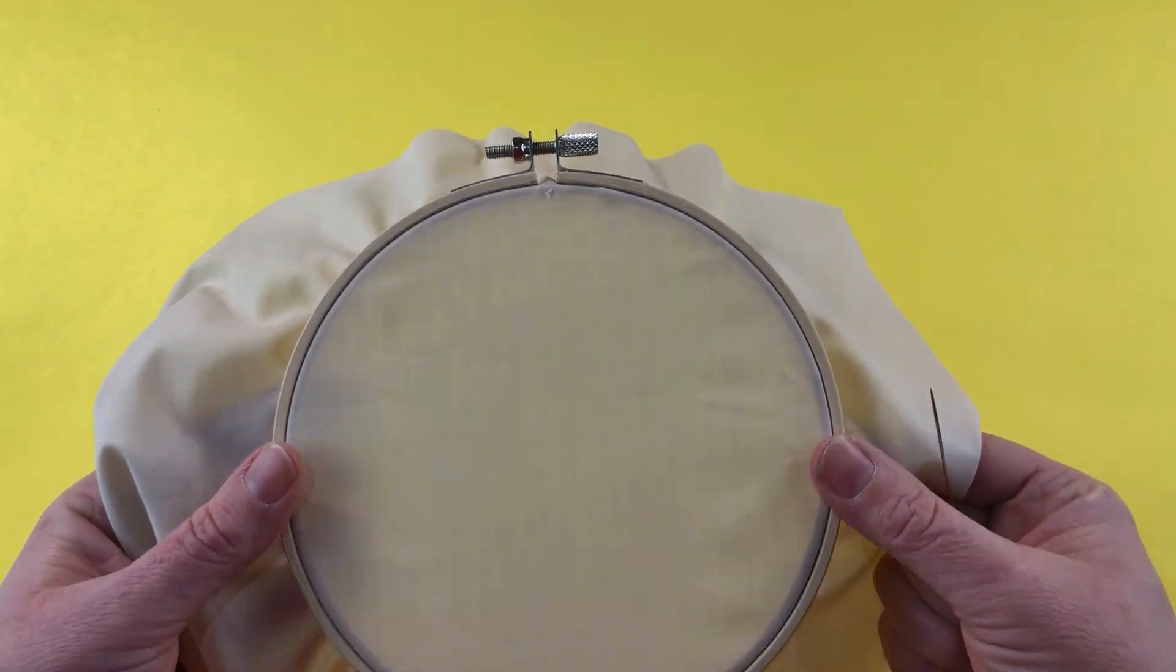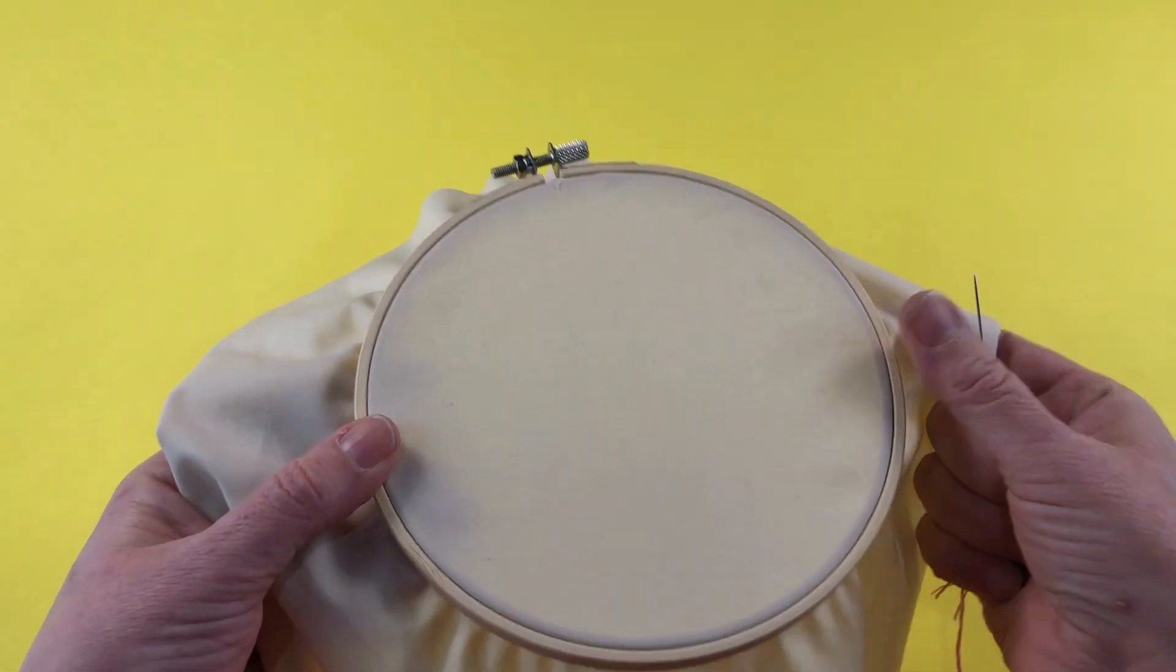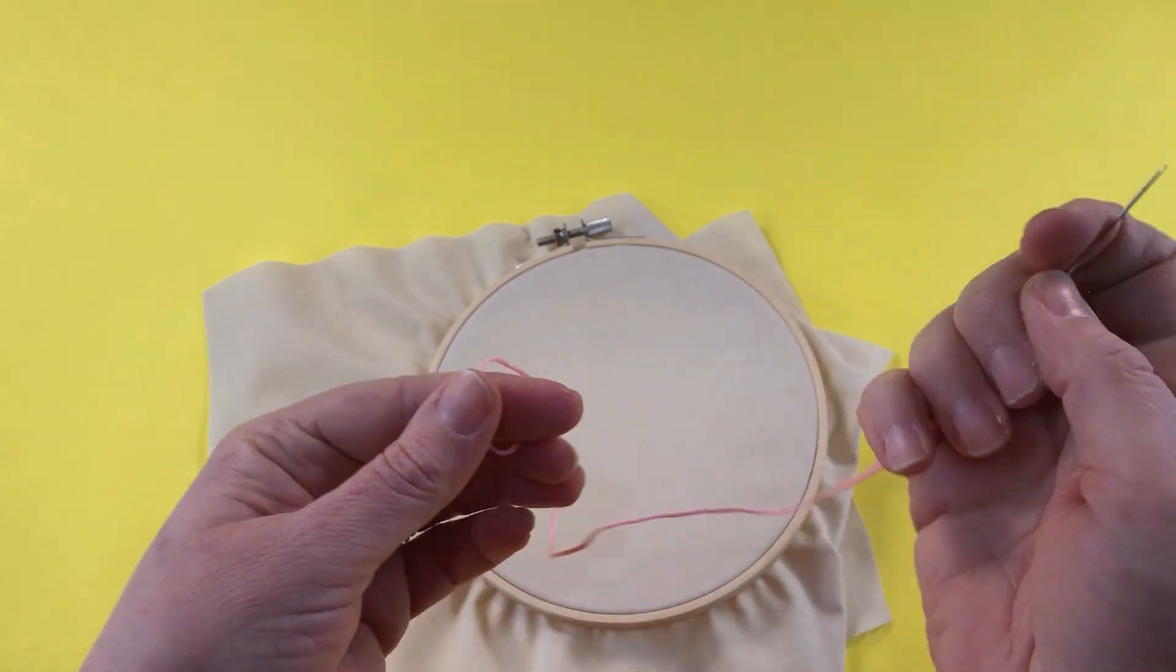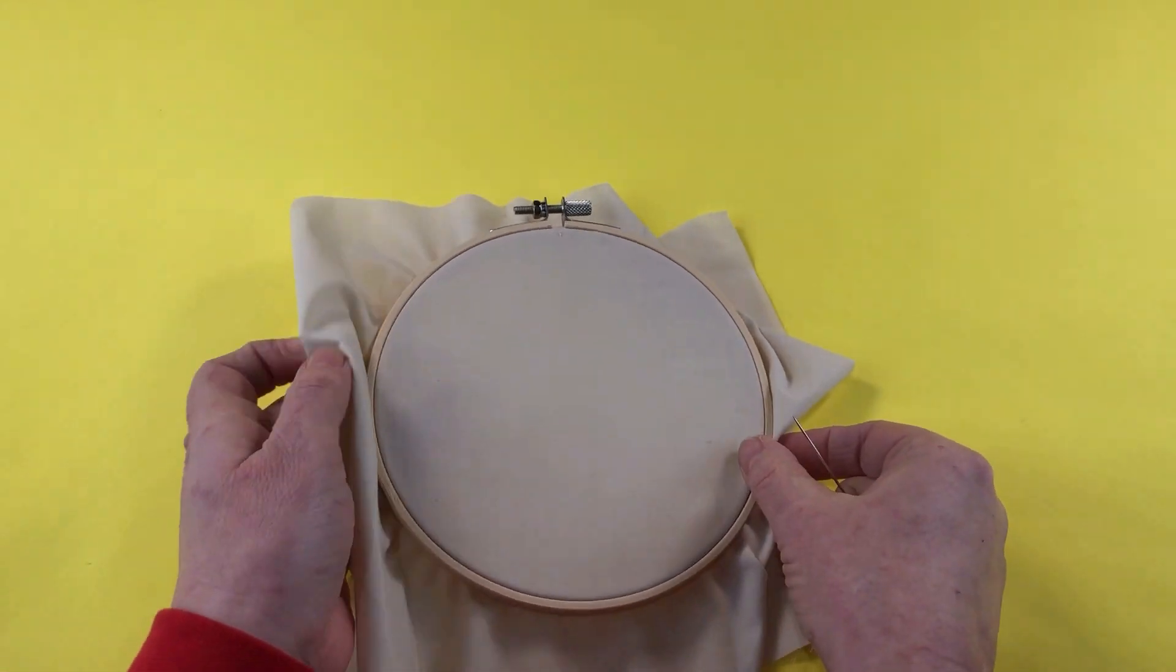In today's tutorial we're going to be looking at how to achieve a stem stitch. Here I've got six strands of embroidery floss with a small knot in the end.